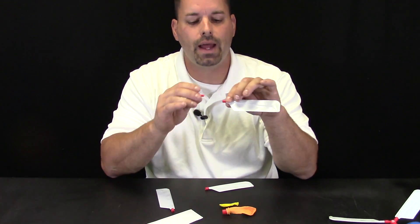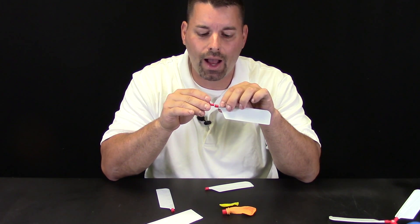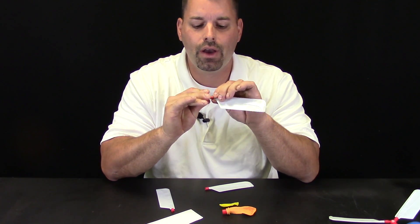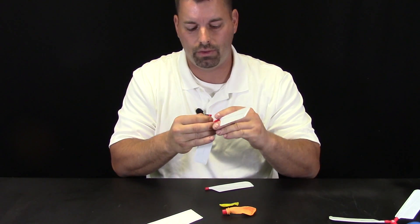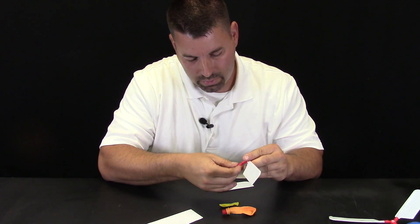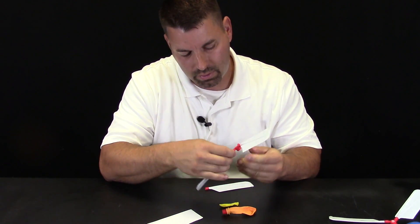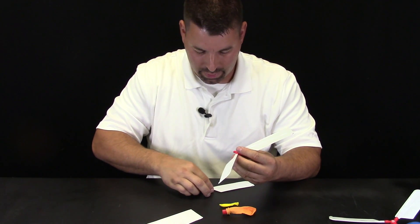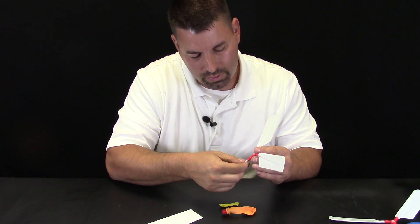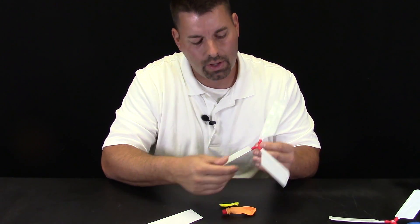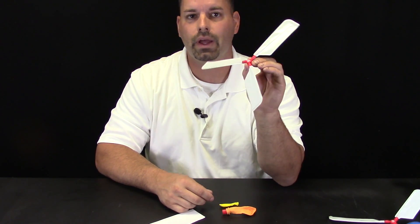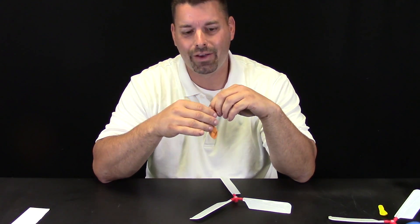Now we are ready to snap the wings on. It is important to line up the slots and make sure that these wings are all facing the same direction. You can hear it clip in. Now I have my wings all set up. Now we are ready to blow up the balloon and see this thing take off.